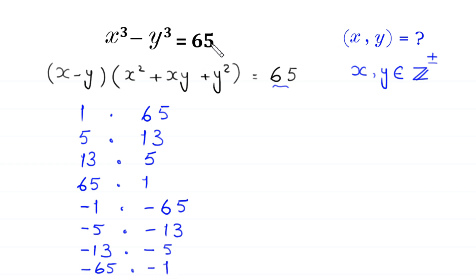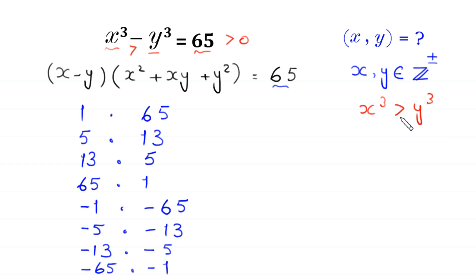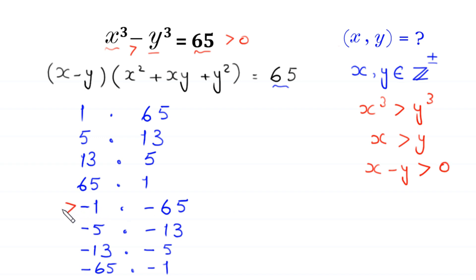Now, this number on the right side is positive, greater than 0. This means x cubed must be greater than y cubed, which means x must be greater than y. If we subtract y from both sides, then x minus y must be greater than 0. So the four options with negative first factors — negative 1, negative 5, negative 13, negative 65 — will all be rejected.